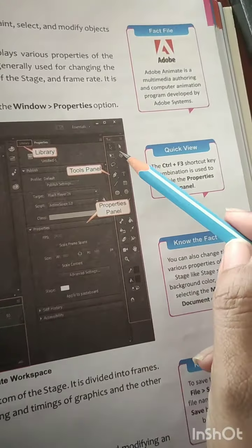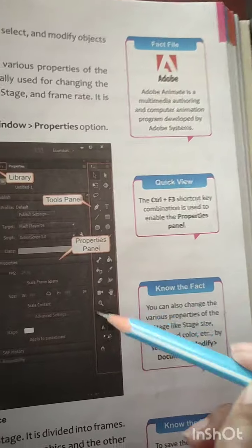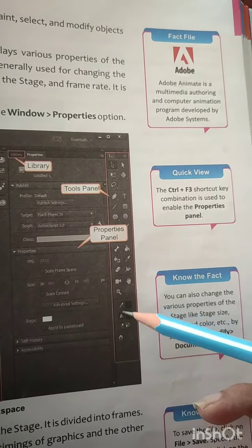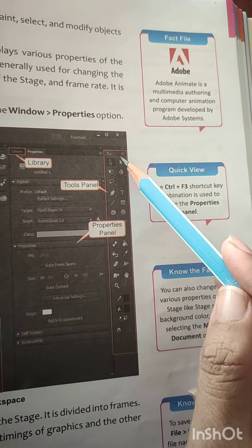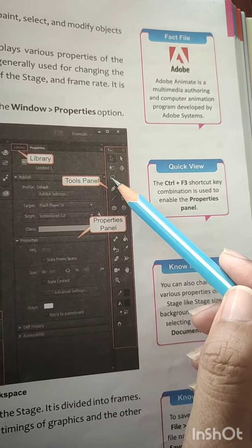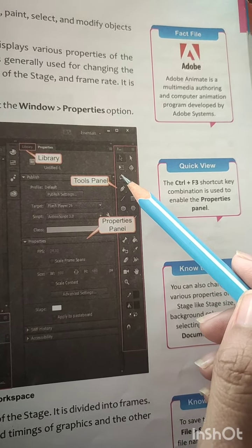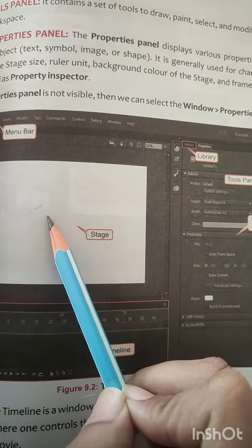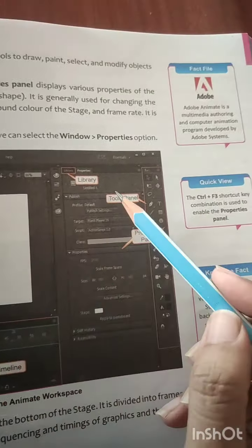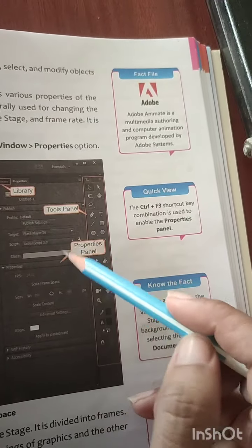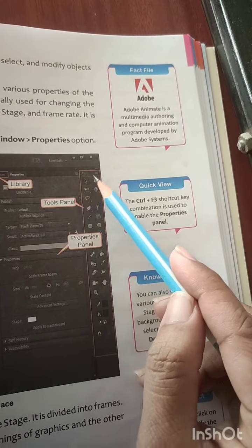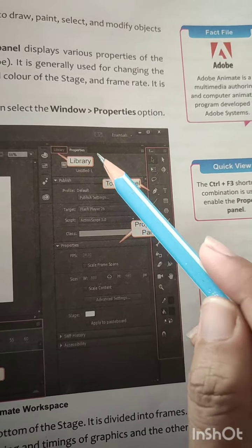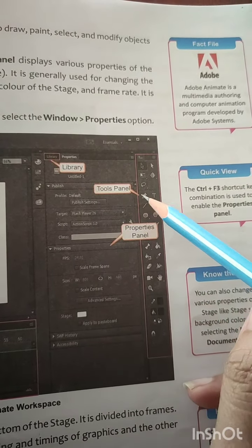Next we will see our tools panel. This is our tools panel — here you will get all the tools. By using these tools you can create, draw, paint, select, or modify the objects that you have drawn in the stage area.